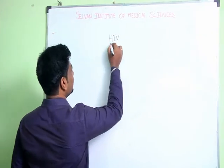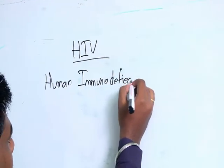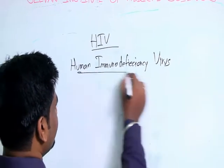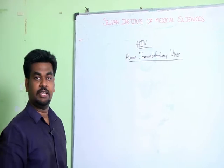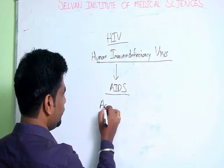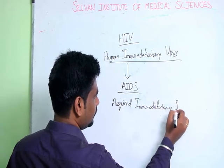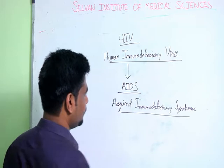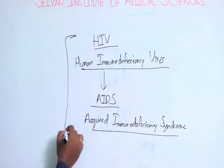Today we are going to see about HIV, its replication cycle, and drugs which act on the replication cycle of HIV. HIV, as we all know, is the Human Immunodeficiency Virus. This virus causes deficiency of the immune system and affects humans. It causes a disease called Acquired Immunodeficiency Syndrome, which takes years to develop after the initial infection by HIV.